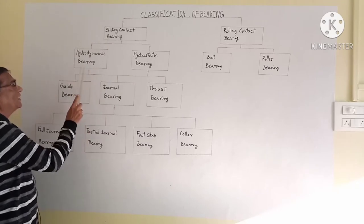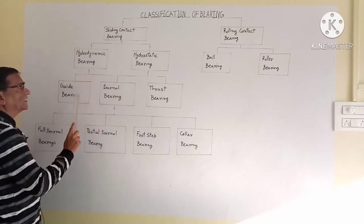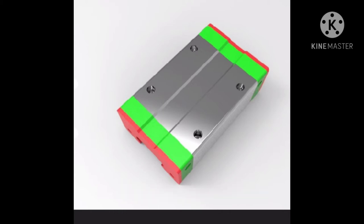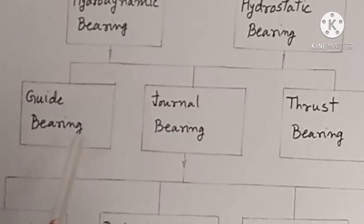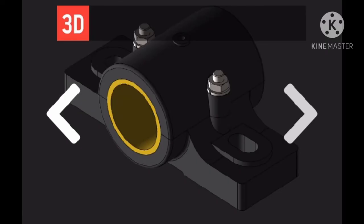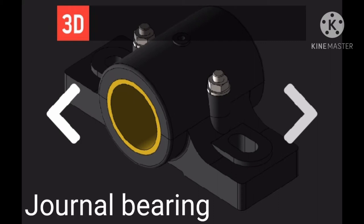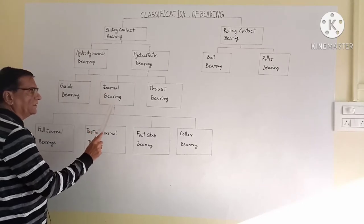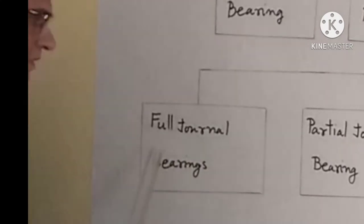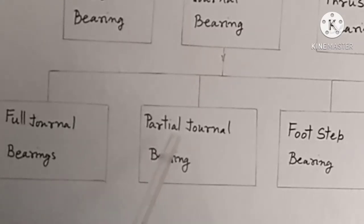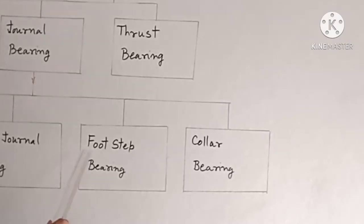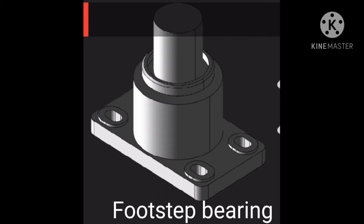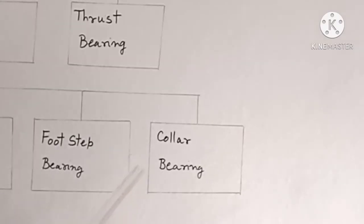Hydrodynamic bearing and hydrostatic bearing are both further classified as guide bearing, journal bearing, and thrust bearing. Journal bearing includes full journal bearing or partial journal bearing. Thrust bearing includes footstep bearing and collar bearing.